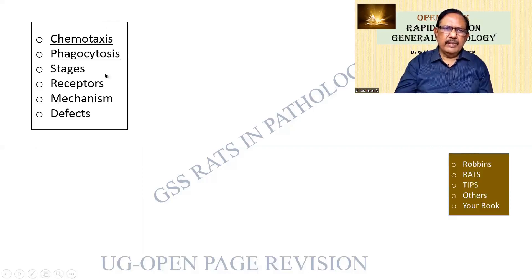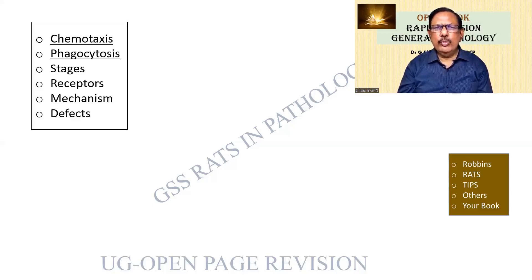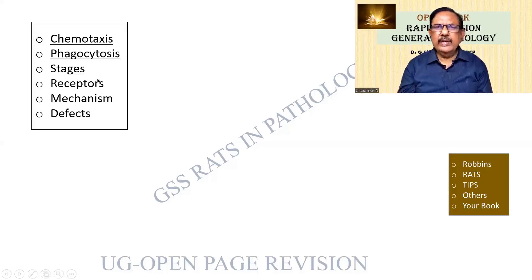Chemotaxis and phagocytosis — phagocytosis has been asked at least 700 times in university exams. Chemotaxis has been asked at least 50 to 100 times. What is the definition? Chemotaxis is the unidirectional movement of a cell towards an attractant. And phagocytosis literally means cell eating. But see what your book has given. The students do not write this answer well — they simply write attachment, engulfment, digestion. That is not what I want. You will have to mention the receptors — see whether there are any specific receptors given, such as Fc, C3b, etc.